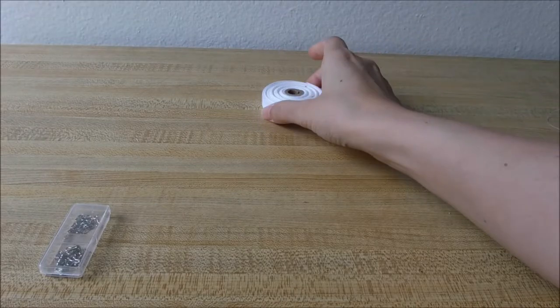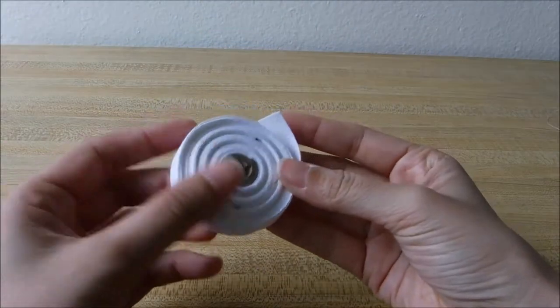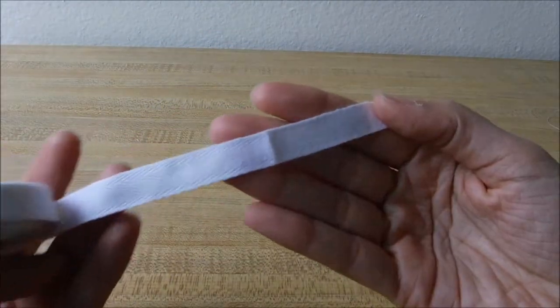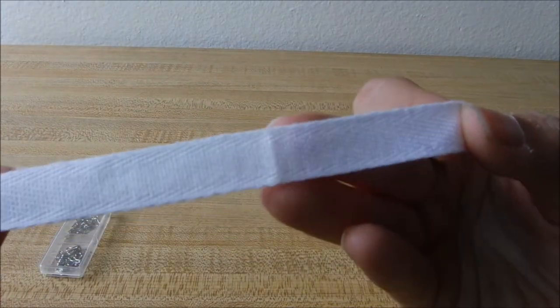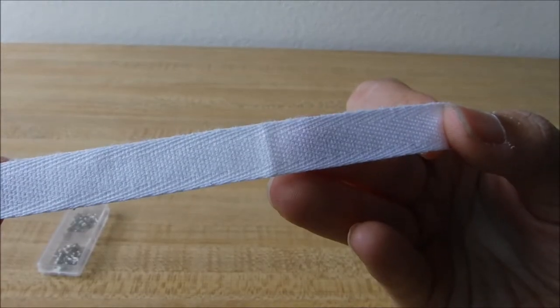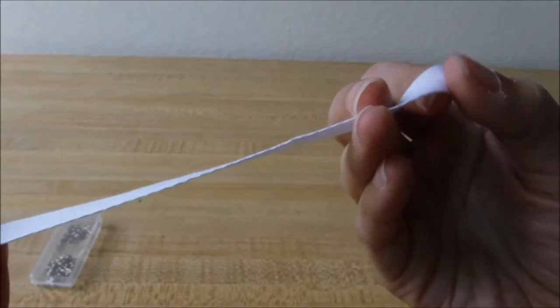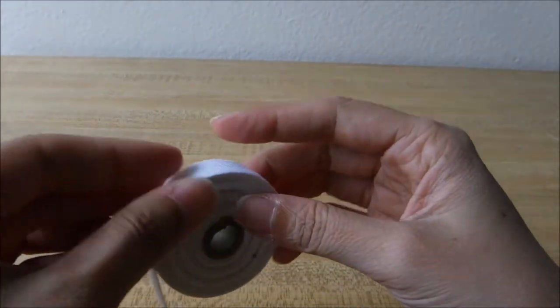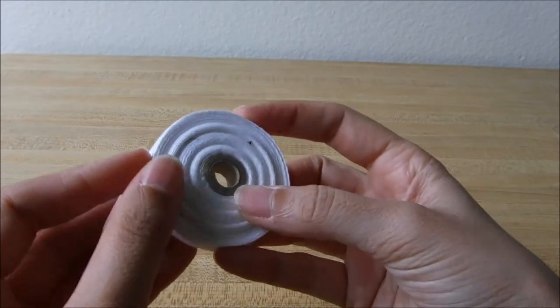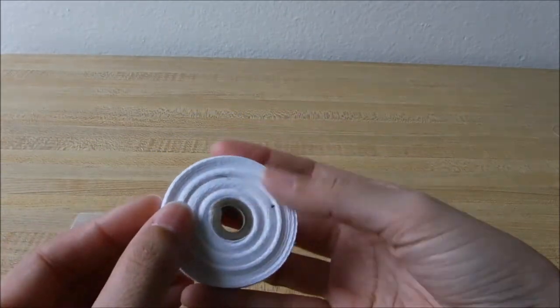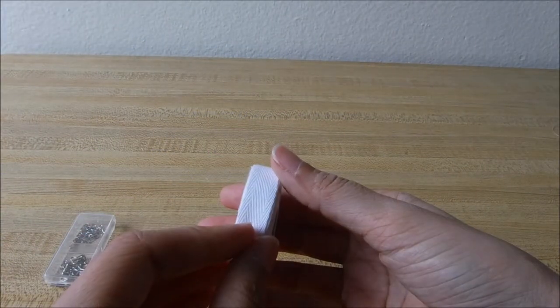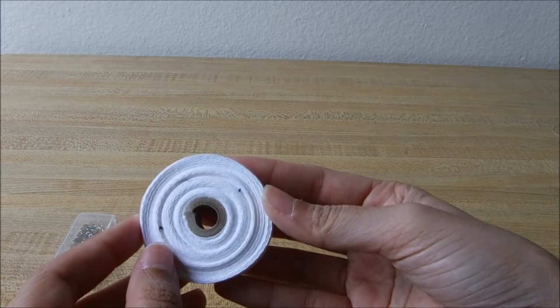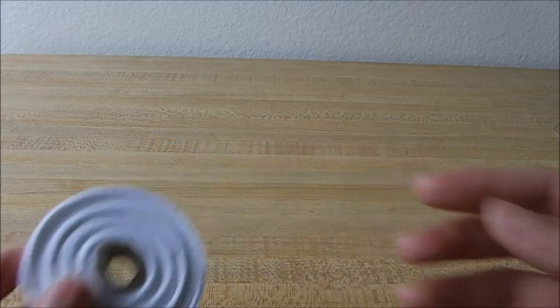I have found that twill tape is the duct tape of the sewing world. It can act as a bias tape. It can act as a seam allowance finish. It can act as a shoulder support in your knit garments. Waste tape, anything that you need, twill tape has you covered. So I always keep a few different widths. This is a half inch. I also have a full inch and quarter inch.